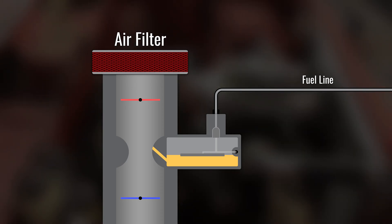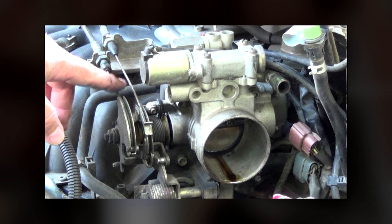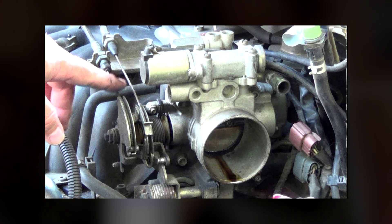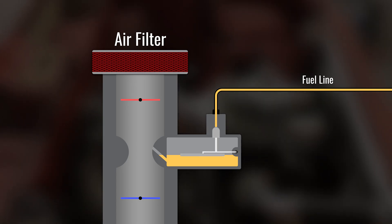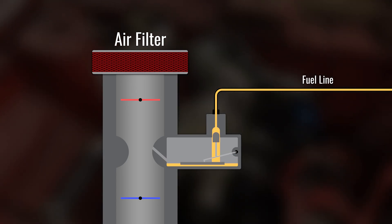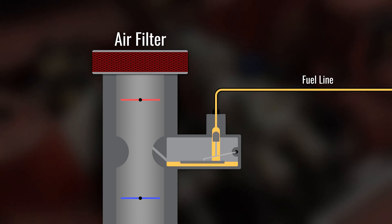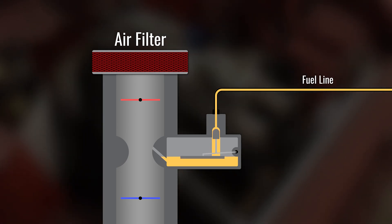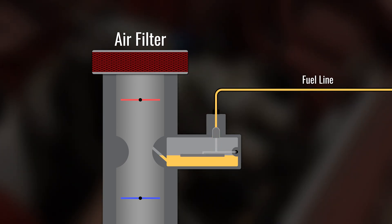The throttle valve is usually connected to the accelerator pedal in a car via a wire, since electronic throttle bodies didn't exist back then. Inside the fuel chamber, there is a float that adjusts the fuel level. Once it gets low, the float drops accordingly and allows more fuel to enter the chamber. When enough fuel has entered, the float rises and seals the chamber inlet.